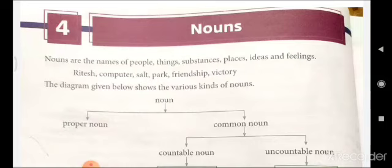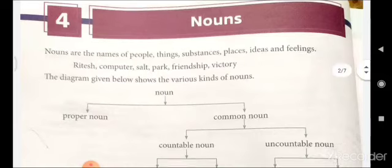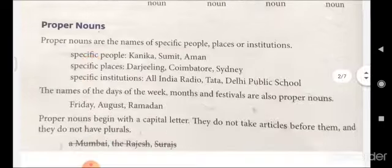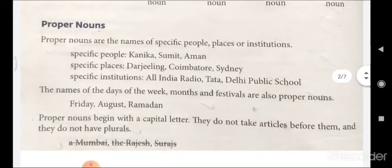Nouns are further bifurcated into two types: the first one is proper noun and common noun. Common noun is divided into two parts, i.e. countable nouns and uncountable nouns. Both countable and uncountable nouns are further divided into two types, i.e. concrete noun and abstract nouns. So let's revise each of them in detail.